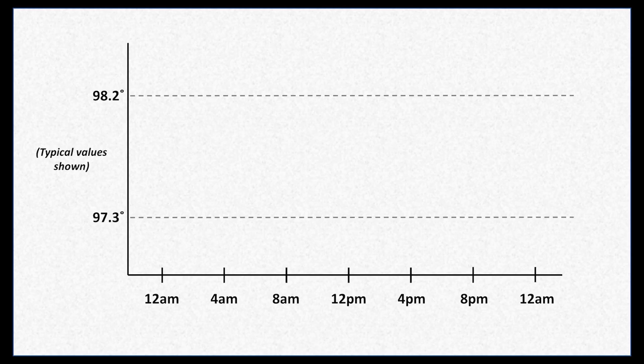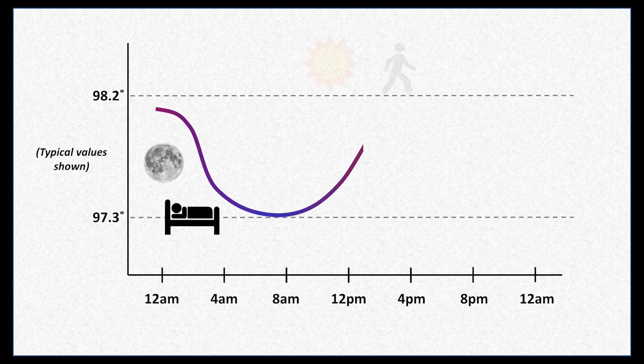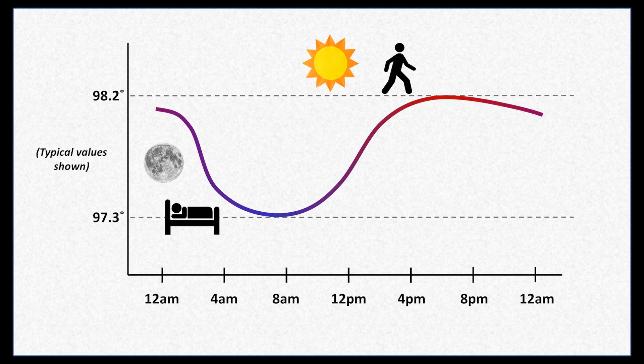Aside from 98.6 being too high a mean, another underappreciated issue is the normal diurnal variation in body temperature. When temperatures are repeatedly measured in the same individual over many days, a pattern emerges in which temperature is lowest in the early morning and highest in the late afternoon and early evening. The difference between average low and average high readings is 0.5 Celsius or 0.9 Fahrenheit. Even Wunderlich, with his inaccurate thermometers, was able to observe this.